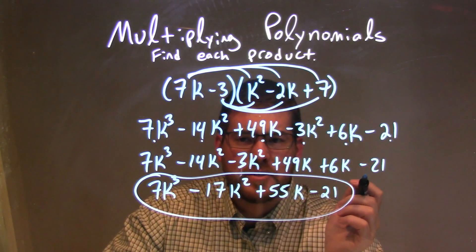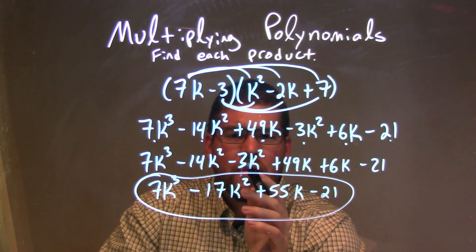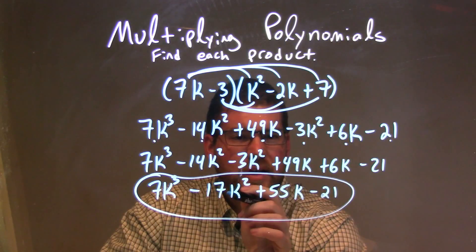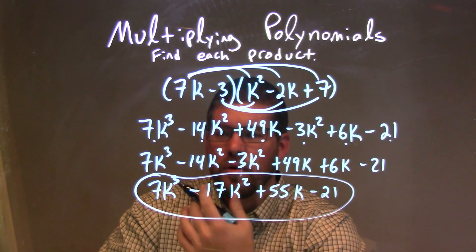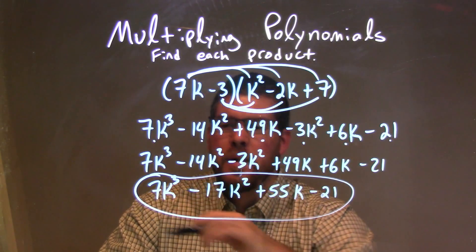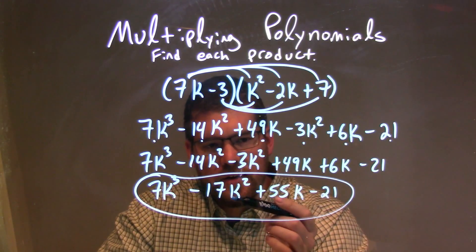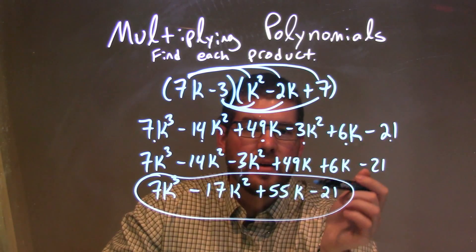We then combine our like terms. So minus 14k squared and minus 3k squared goes to minus 17k squared, and 49k plus 6k is 55k. And so our final answer is 7k to the third minus 17k squared plus 55k minus 21.